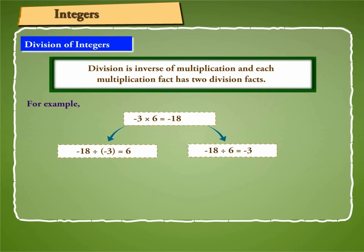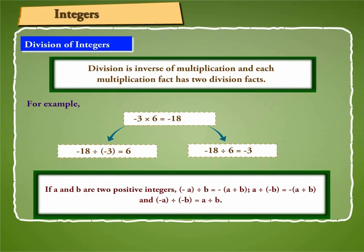From this we conclude, if A and B are two positive integers, then (-A) ÷ B = -(A ÷ B), A ÷ (-B) = -(A ÷ B), and (-A) ÷ (-B) = A ÷ B.